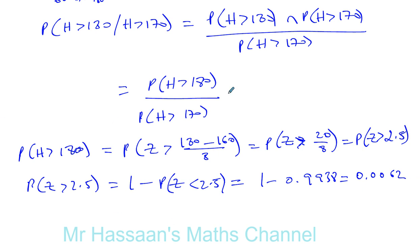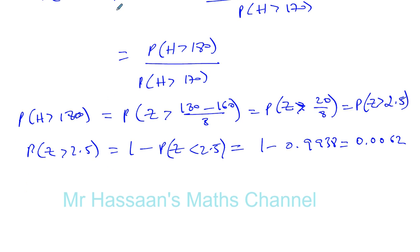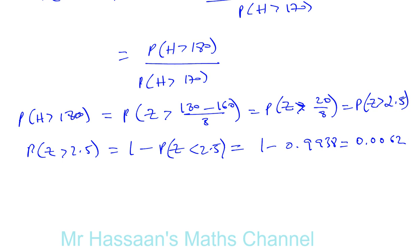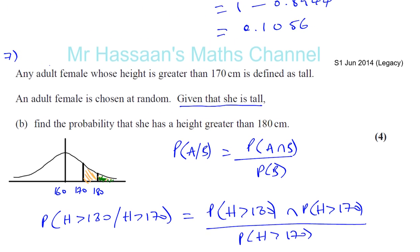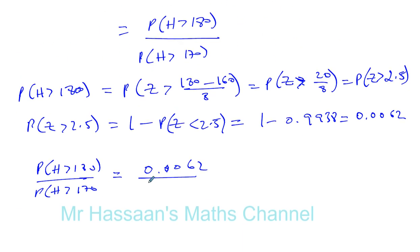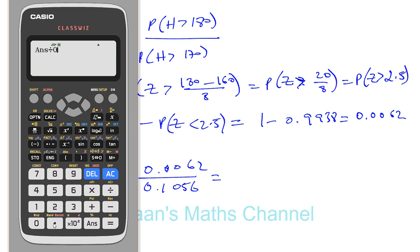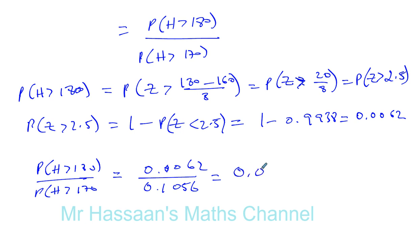Now we can do what we said — our answer is the probability that height is greater than 180 over the probability that height is greater than 170. We've now found P(height > 180) which is 0.0062, divided by our answer for the first part which was 0.1056. That gives us the answer 0.0587.